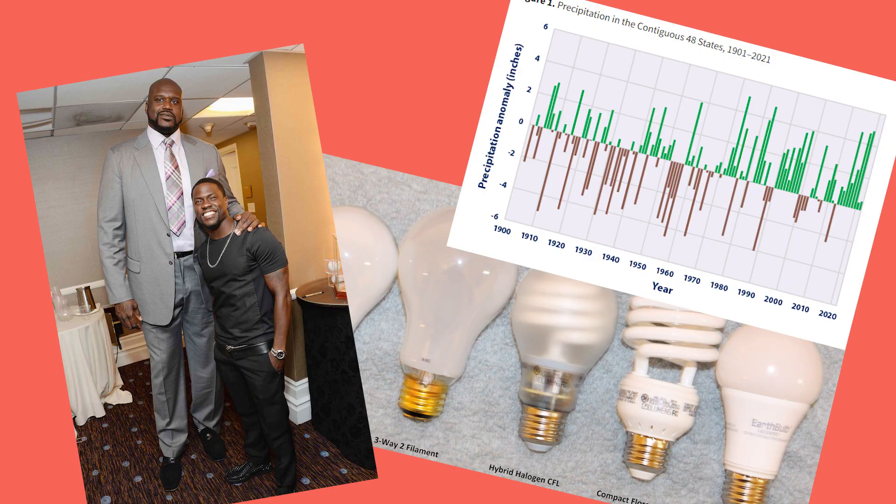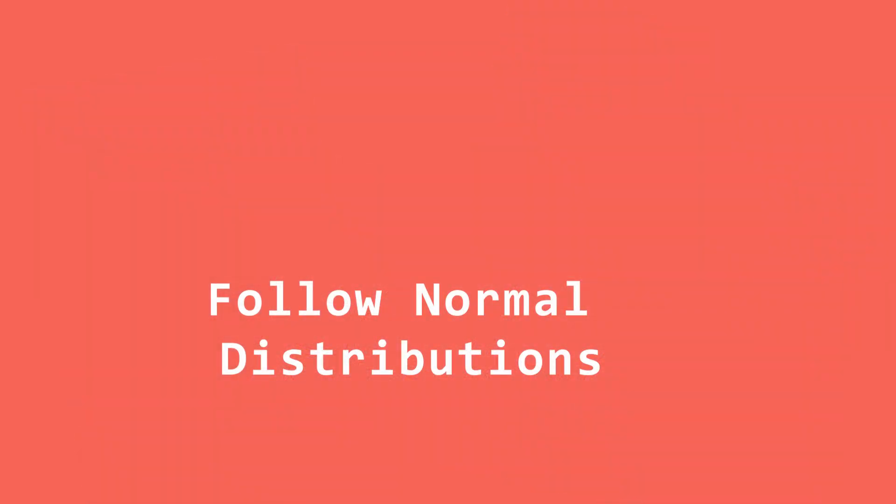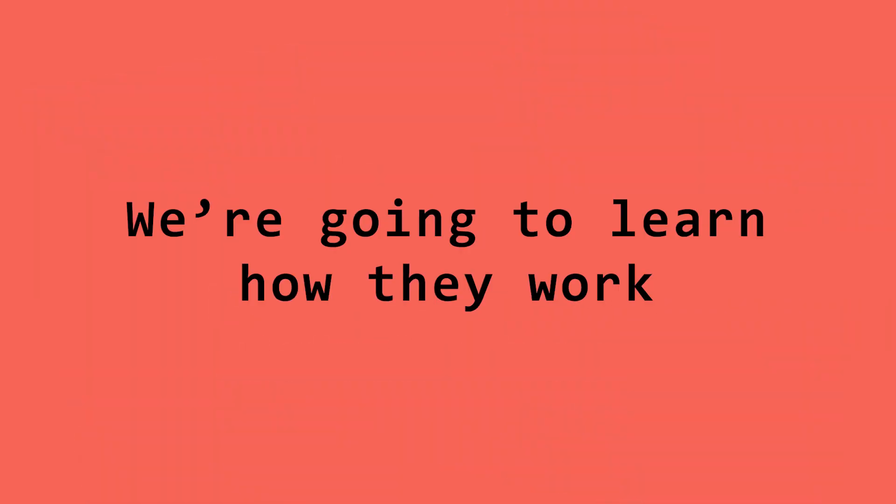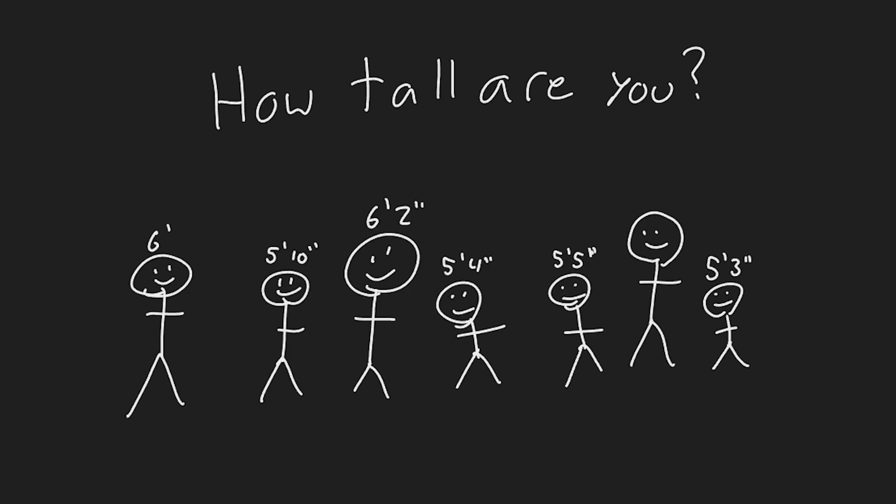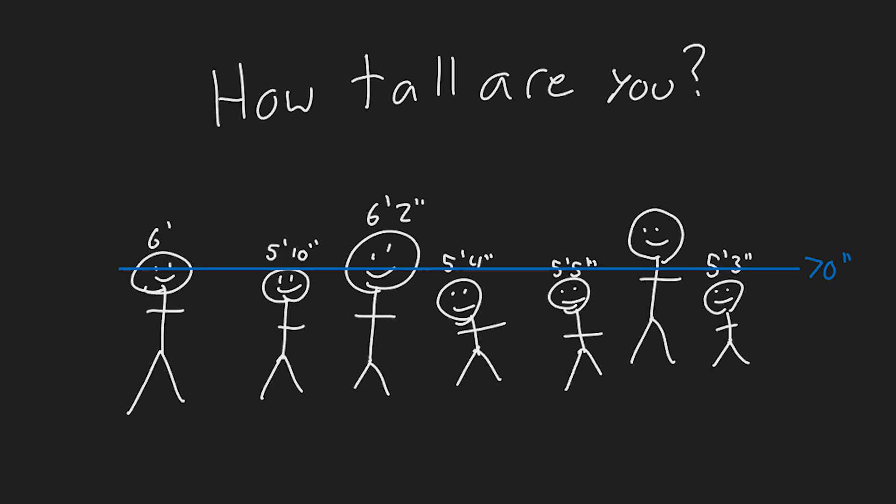All of the real-world examples I mentioned at the start of the video follow normal distributions, and in this first section, we're going to learn how they work. We'll look more closely at height because it's a classic example. If you were to ask every American male who is at least 20 years old how tall they are, you would get a lot of different answers.